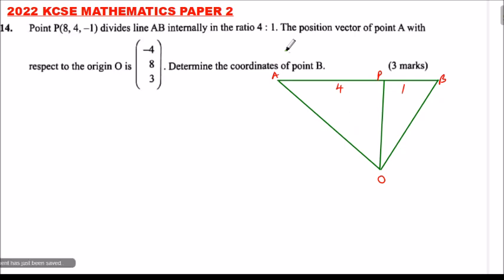We can get the coordinates of P we are given. It is 8, 4, minus 1. The coordinates of A, since we have been given the position vector of A, we can get the coordinates. Just write the column vector in horizontal form.